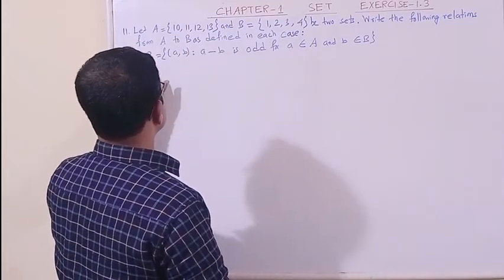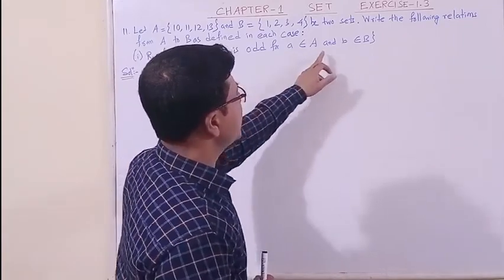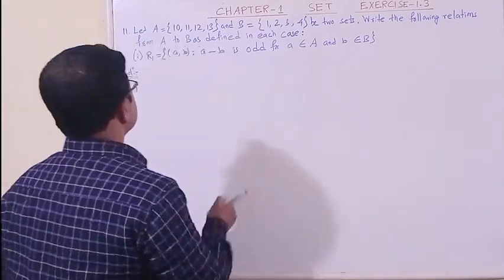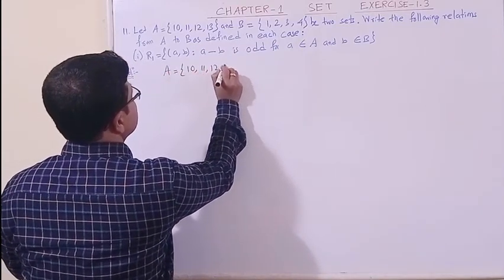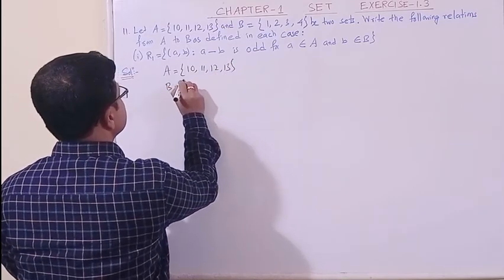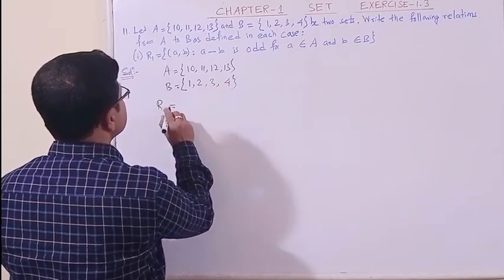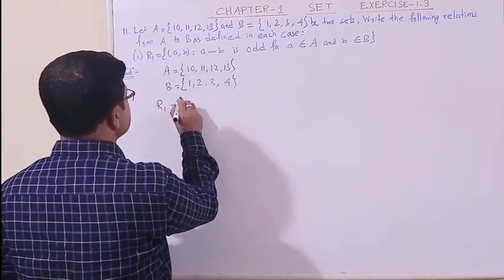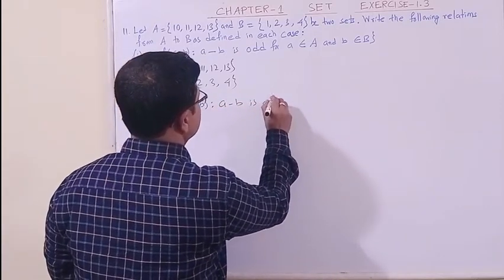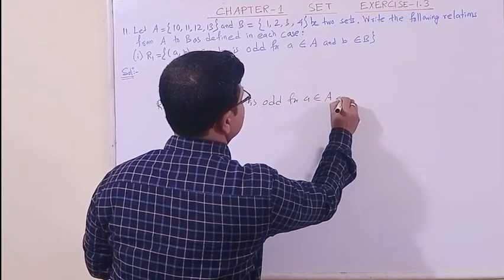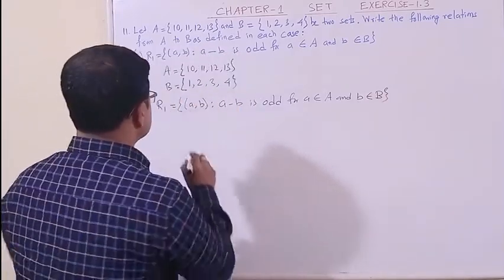We have taken the first part of it. Relation R1, the ordered pair is (a, b) such that a minus b is odd for a belongs to A and b belongs to B. So here we have a set A with elements 10, 11, 12, 13, then the set B with elements 1, 2, 3, 4. The condition is such that a minus b is odd for a belongs to set A and element b belongs to the set B.